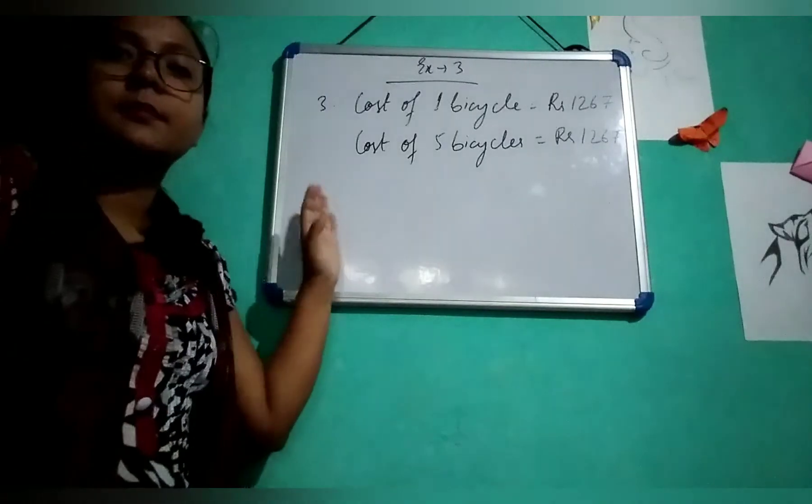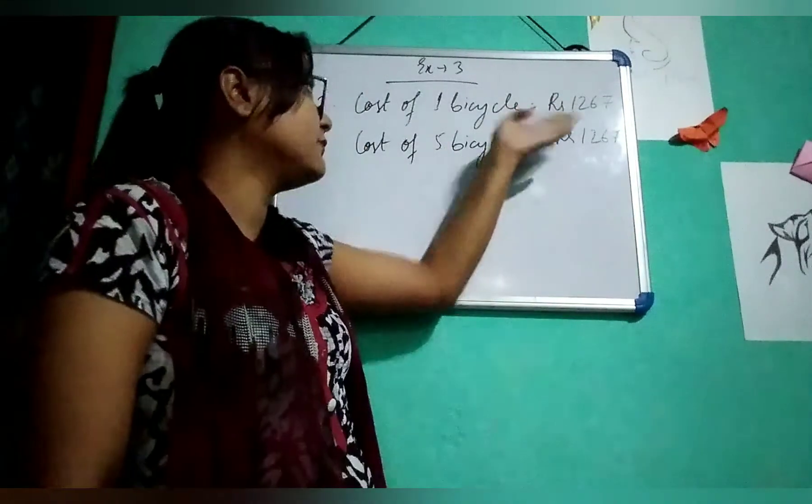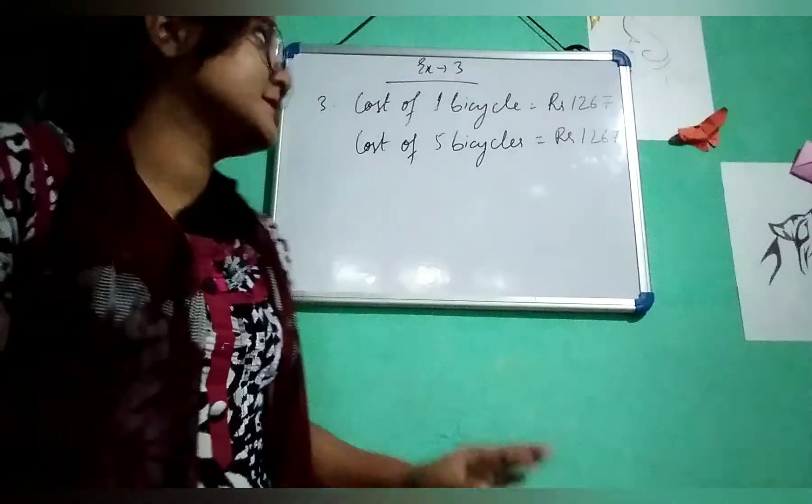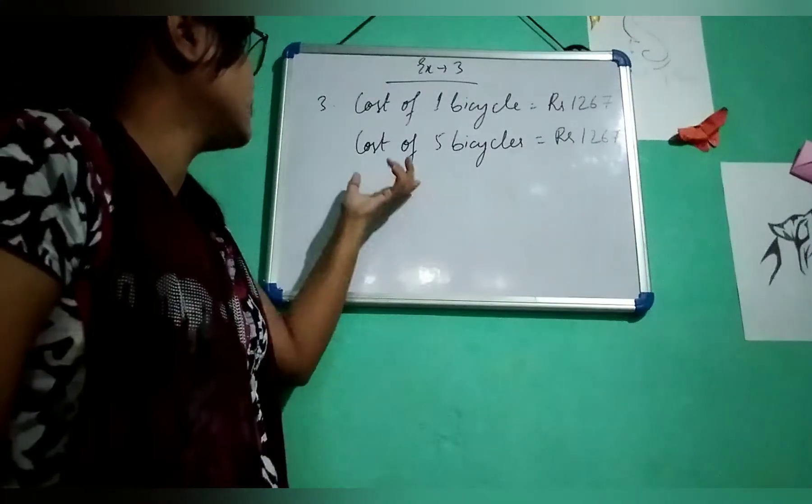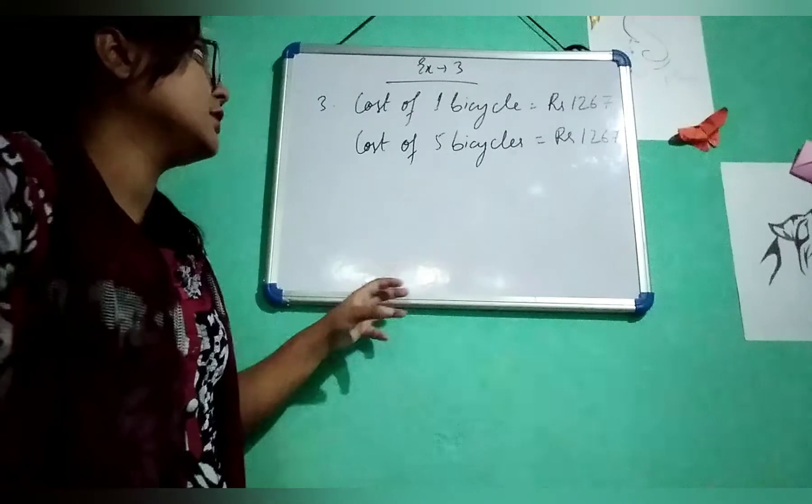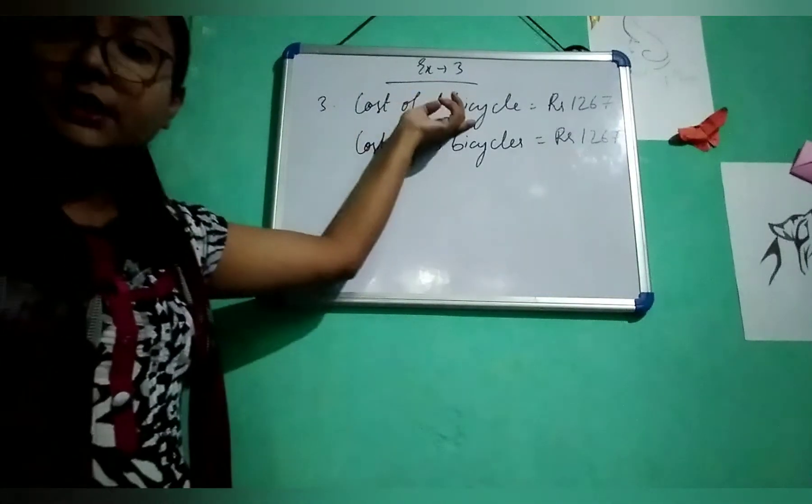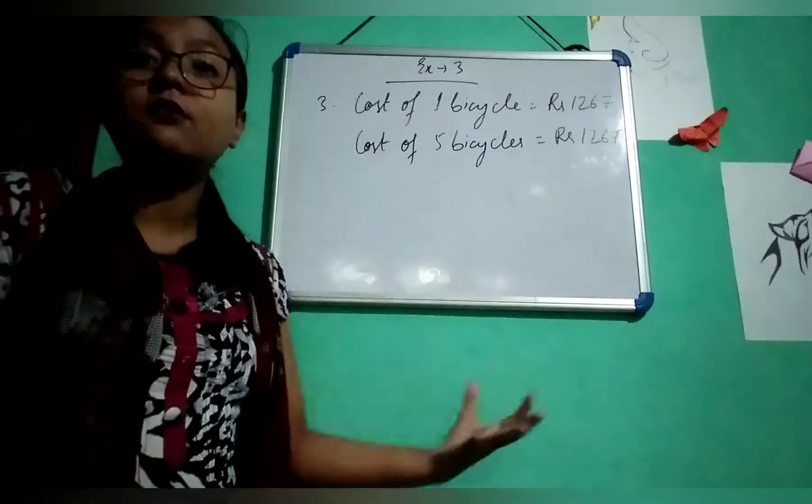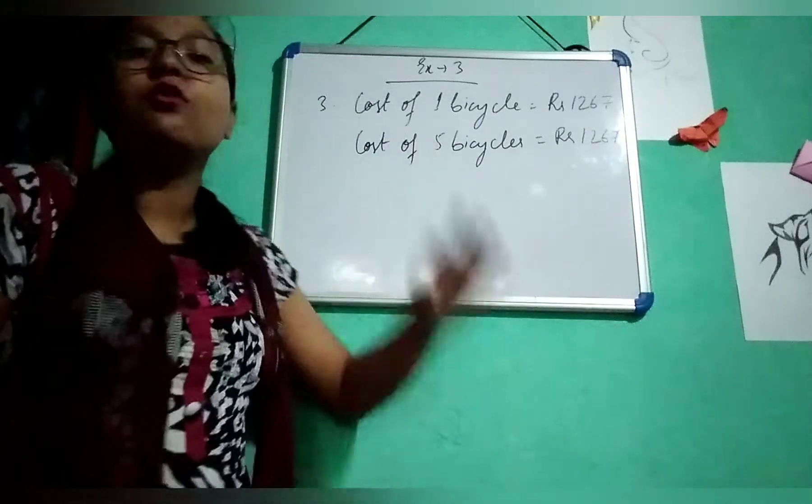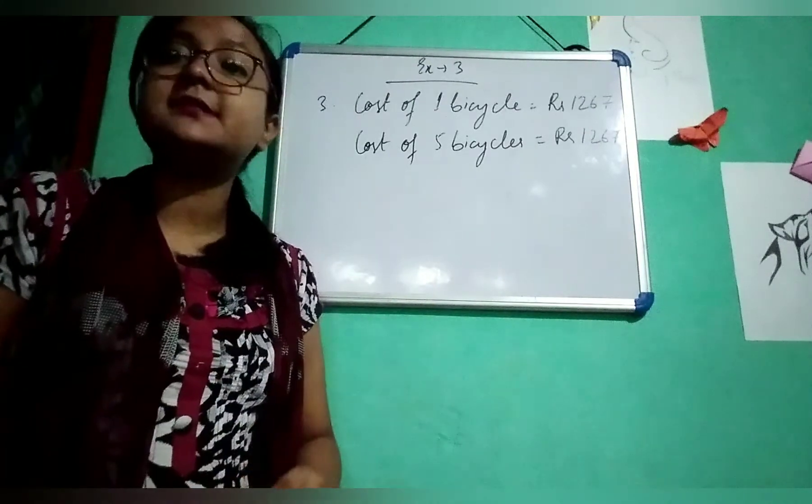Number 3 question: they have given cost of 1 bicycle is Rs. 1,267 and you are asked to find cost of 5 bicycles. Whenever in a question they have given for 1 quantity and you need to find for many quantities, it is always multiplication.